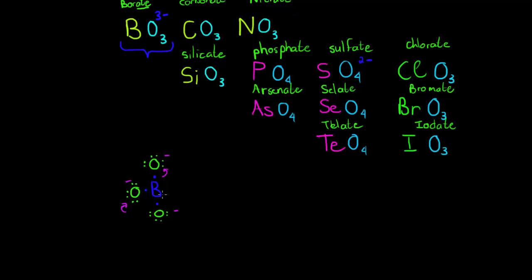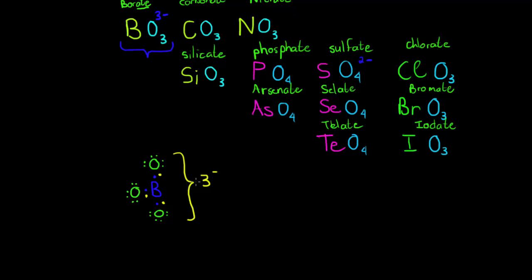Since boron has given away its electrons, it has a three-positive charge. But each of the three oxygens that still needs an electron has a one-negative charge each. The net charge is zero at this point. However, if we fill out all the orbitals by adding one more electron to each oxygen, we get three extra electrons total, giving the whole borate ion a three-negative charge.